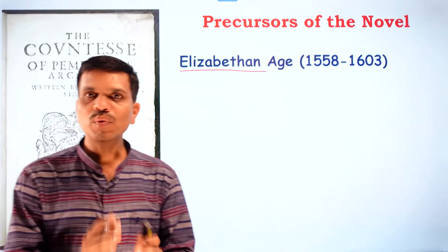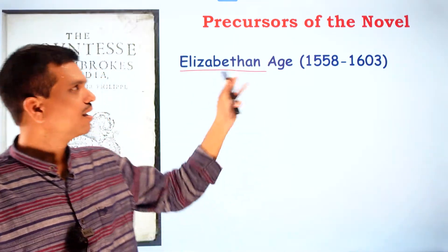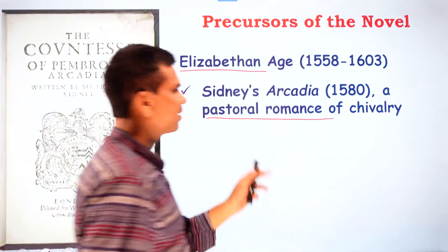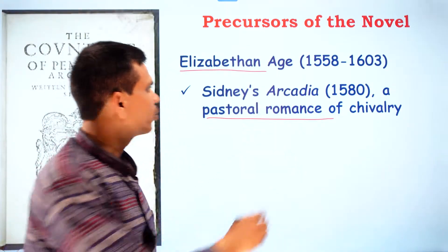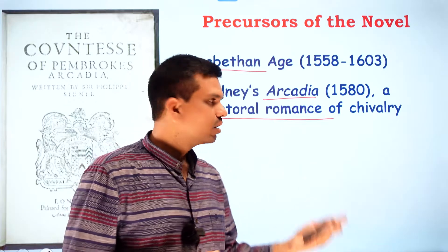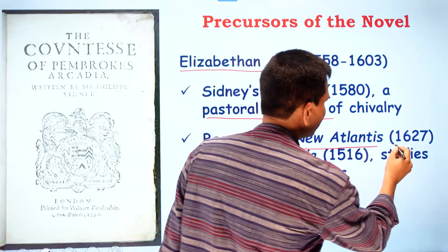The Elizabethan age, generally considered from 1558 to 1603, is the golden age of English literary history, and the novel has its roots there. Sidney's Arcadia, composed in 1580, is a pastoral romance of chivalry — the setting and characters belong to the rural part of the country. It is based on chivalry, adventure, and knighthood, and is an important work in English literature.